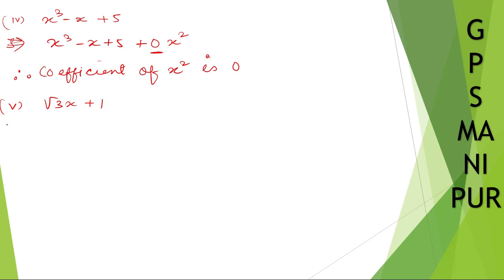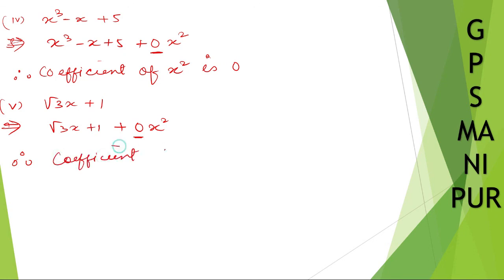Roman number five: root three x plus 1. Same thing — we can write plus zero into x square. So the coefficient of x square is zero. That's all, thank you so much, we will meet in the next video.